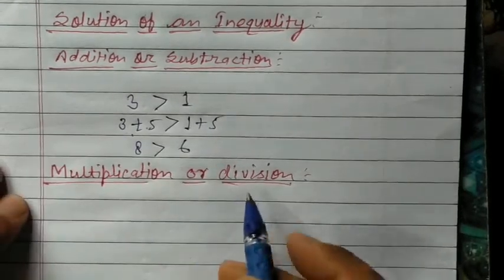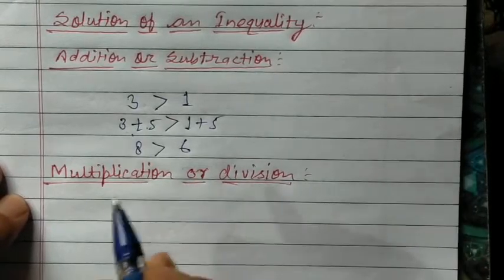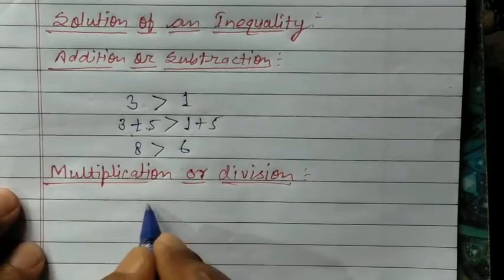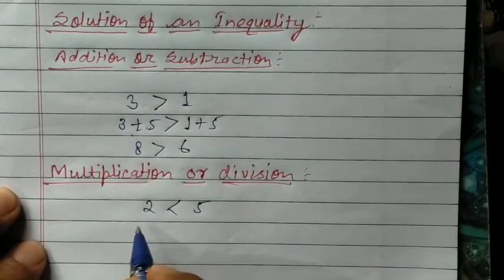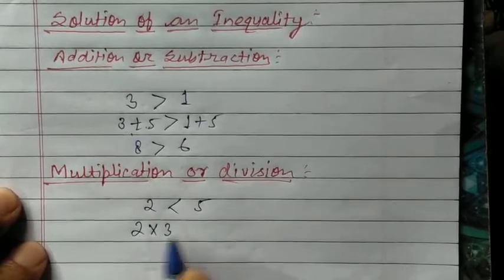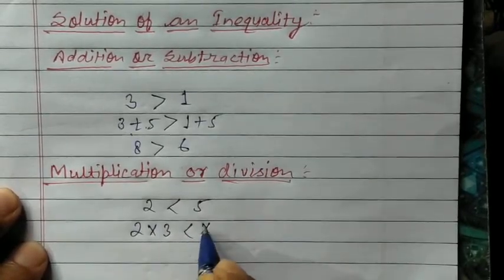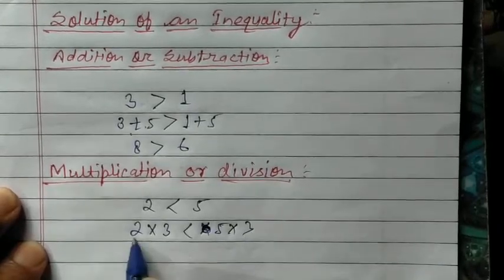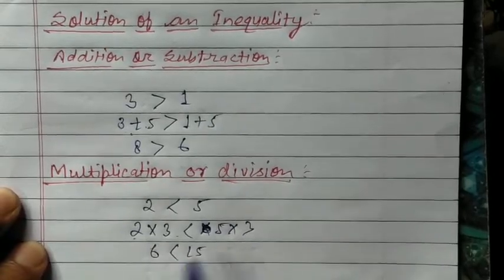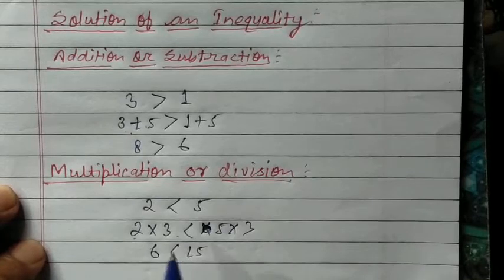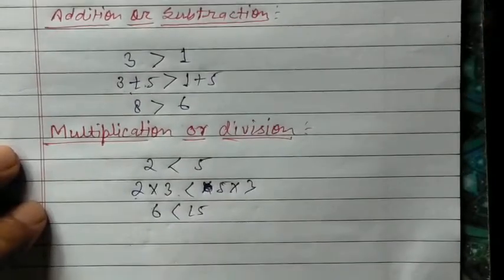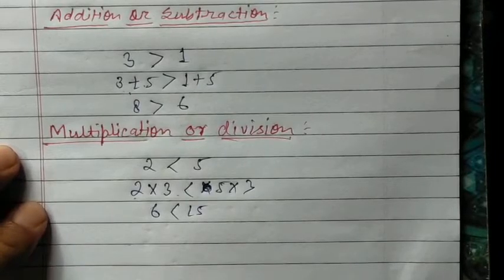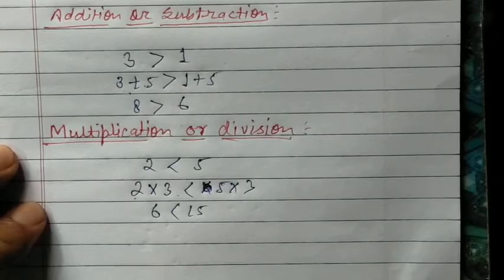Now, multiplication and division. In multiplication and division there is also a similar case. But here you need to pay a little attention. Suppose 2 is less than 5 — we know that. But — and whenever you hear 'but', you should understand something tricky is here — if we multiply a negative number on both sides, or divide by a negative number on both sides, then the inequality sign gets changed.